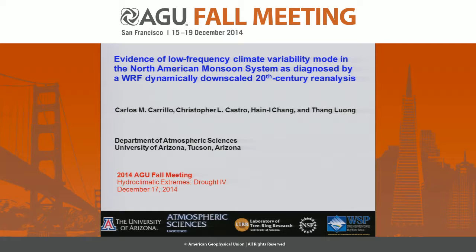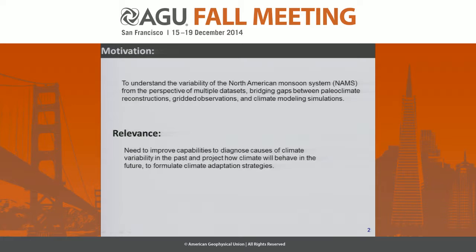The motivation behind this study is to gain a better understanding of the North American monsoon system based on a multi-dataset approach to reduce and bridge the gap between observation, paleoclimate reconstruction, and modeling simulation. The importance of this study is based on the need to improve capacity to diagnose causes of drought variability in the past and project how they will be in the future, and to formulate climate adaptation strategies.